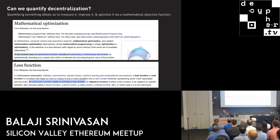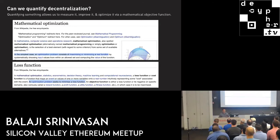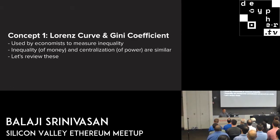People think decentralization is important, and if you could quantify it, it would unlock a whole body of mathematical tools you could apply — even if that quantification was imperfect. So to get to a quantification, we're going to introduce a few concepts.